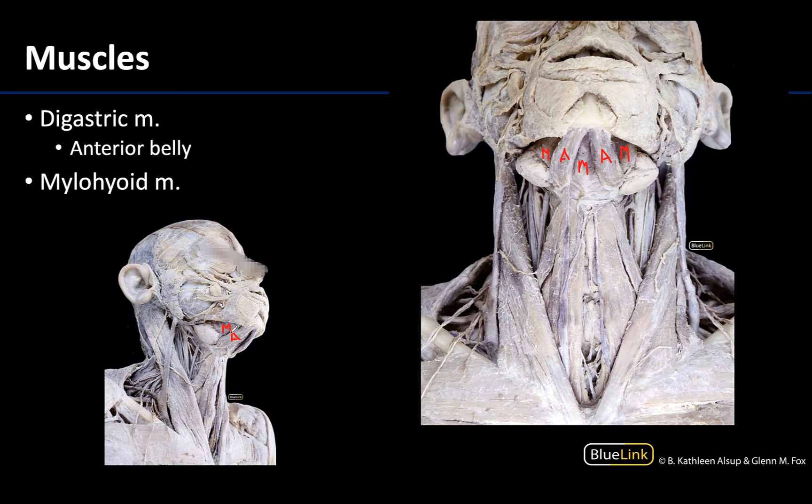Like the anterior belly of the digastric muscle, the mylohyoid will be innervated by the nerve to the mylohyoid, which is a branch of V3.